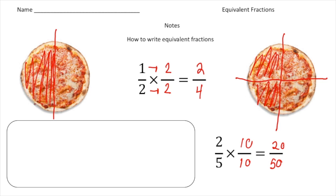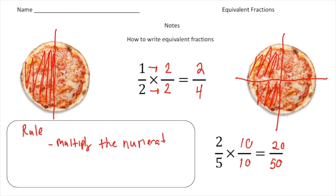Here's the rule to write down inside this box: to write equivalent fractions, you have to multiply both the numerator and denominator by the same factor.